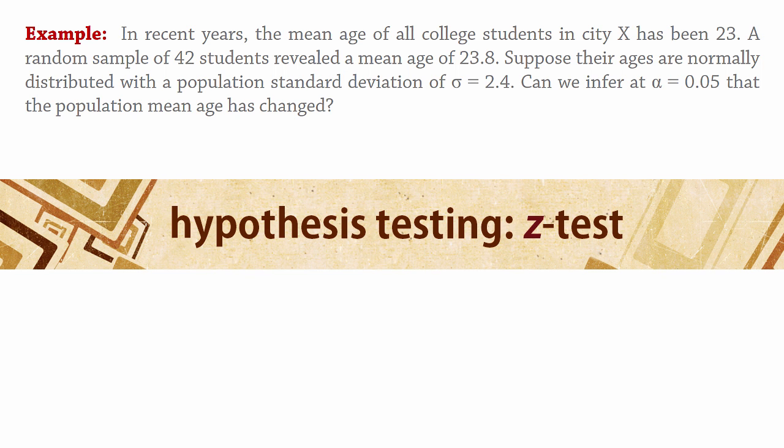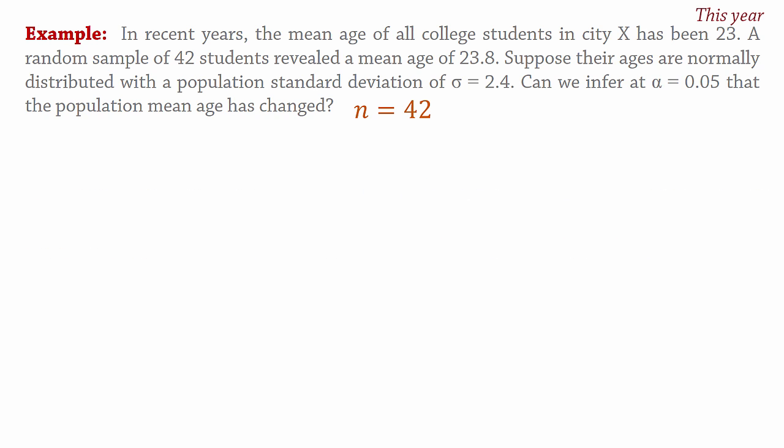In recent years, the mean age of all college students in City X has been 23. This year, a random sample of 42 students revealed a mean age of 23.8. Suppose their ages are normally distributed with a population standard deviation of 2.4. Can we infer at alpha equals 0.05 that the population mean age has changed?